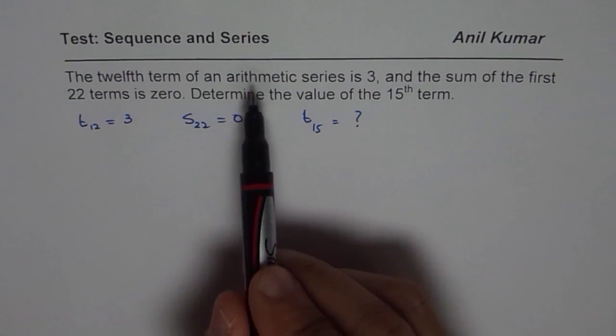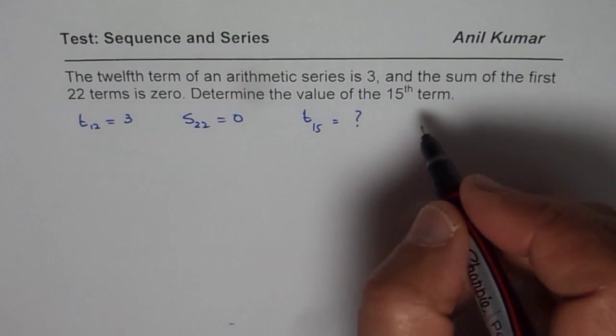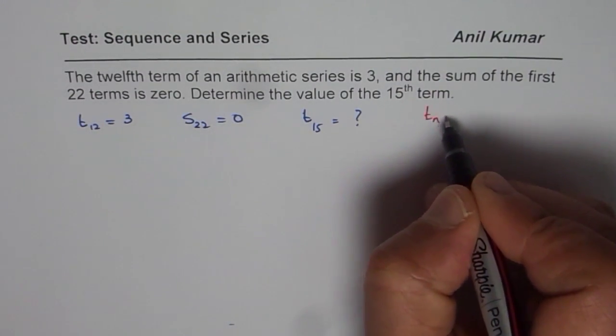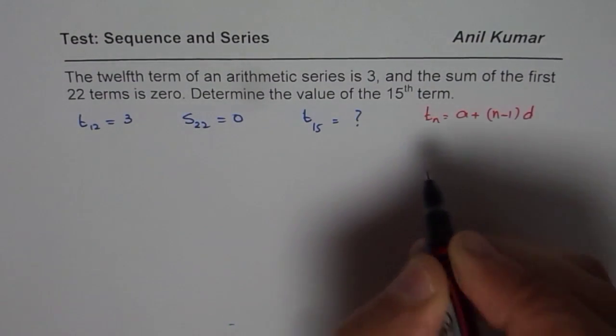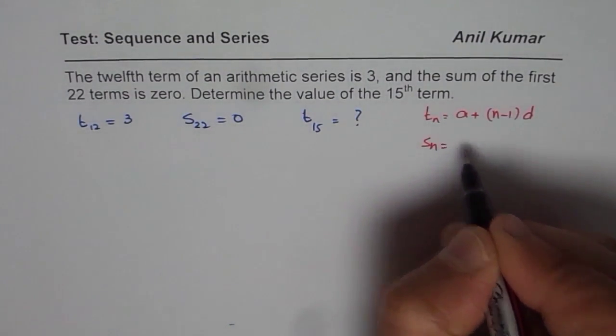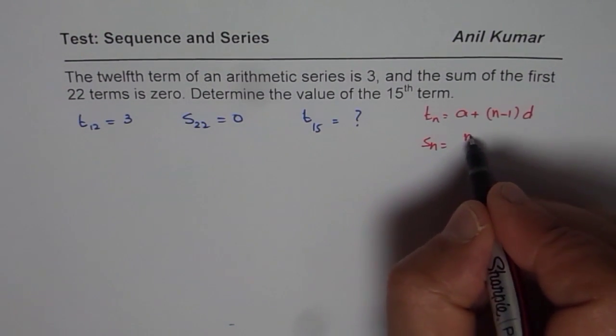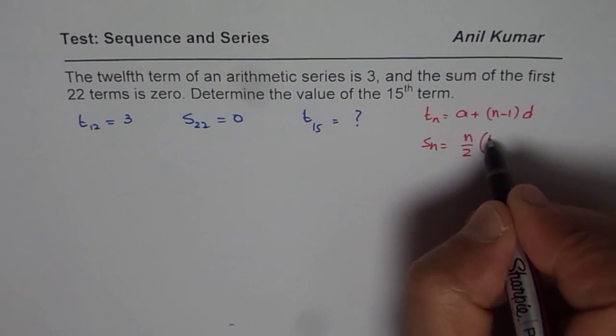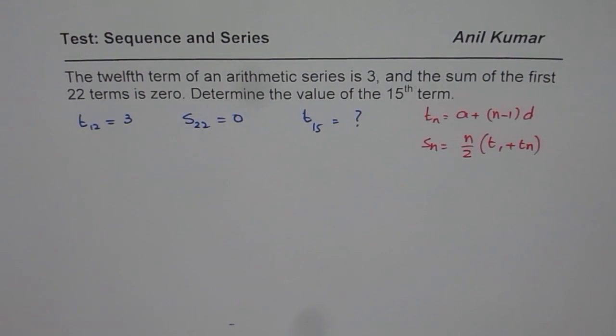First write down whatever you know about the question or what you want to find. Now it is arithmetic series, so write down the formulas for sum and the number of terms. The number of terms is A plus N minus 1 times D. And for sum, we have actually two formulas. I will use the one which is N divided by 2 times T1 plus TN. And I will tell you why I am using this formula.